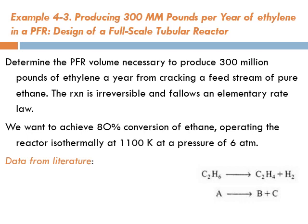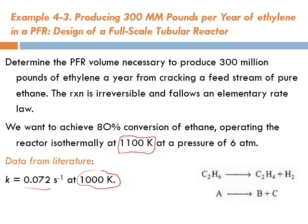We need kinetic data from the literature. We need the value of k at 1100 Kelvin. We go to the literature and don't find the value of k at this temperature; however, we find the value of k at a different temperature. In order to convert it, we need the activation energy, so we look that up as well.